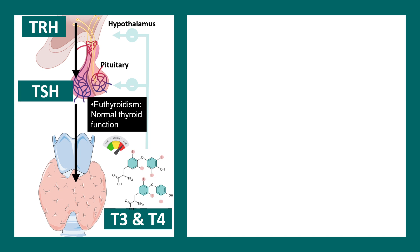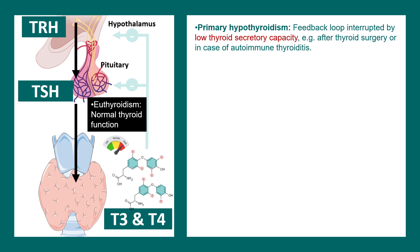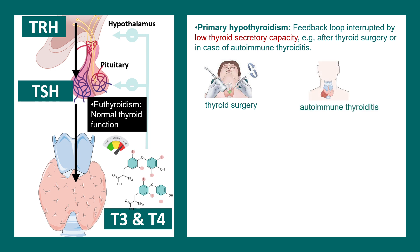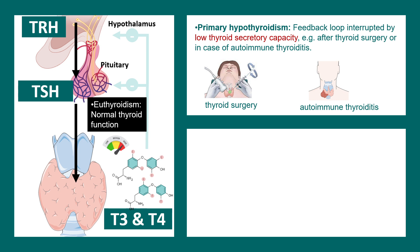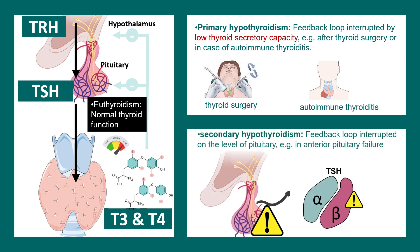But things can go wrong, such as in primary hypothyroidism. In that case, a low level of thyroid hormone gets secreted and the regulatory feedback loop is hindered. This could be due to thyroid surgery that reduces the thyroid gland's ability to produce hormones, or autoimmune thyroiditis like Hashimoto's. There could also be secondary hypothyroidism, where there is a feedback error from the pituitary — for example, the pituitary is not secreting enough TSH — which can occur in anterior pituitary failure or pituitary tumors.